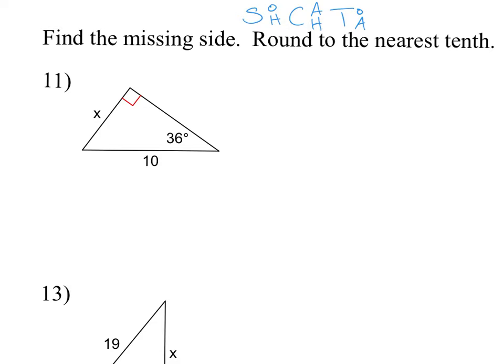The first step is still to label my triangle based on my angle given. So my angle given is 36 degrees. Draw a line straight across. This is my opposite side. My side opposite the right angle is my hypotenuse. And of course, by default, my third side is my adjacent side.